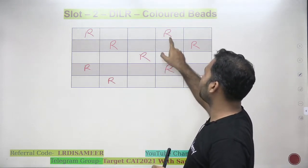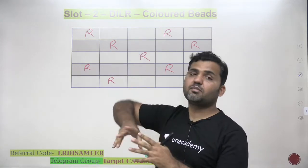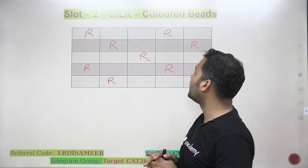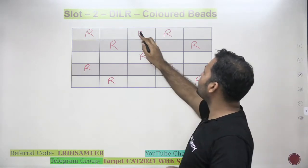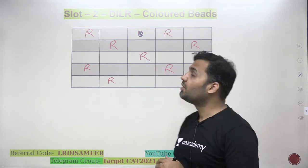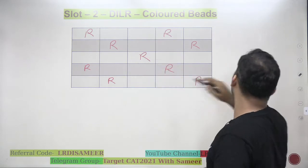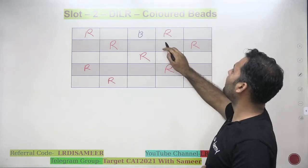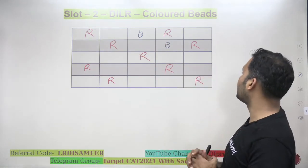If I place red in this diagonal, column-wise those two reds would be adjacent — that's not allowed. Now, between any two red beads, I need at least one green and one blue. There is also the condition that between any two blue beads there must be one green. So if I place blue here, I cannot place blue in the immediately adjacent position. I place blue further along and then place green in between.